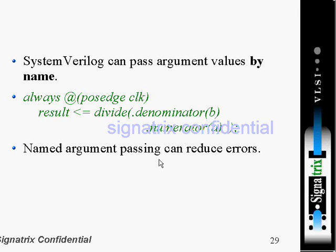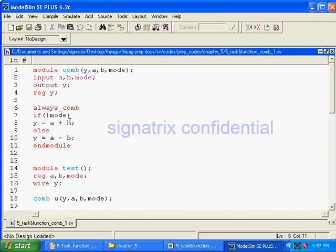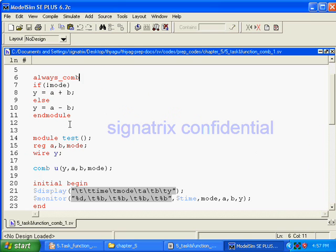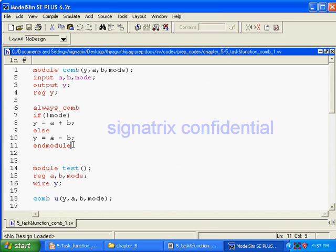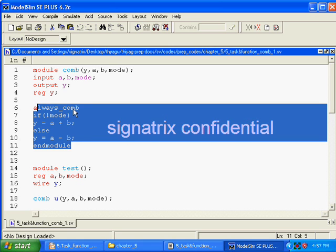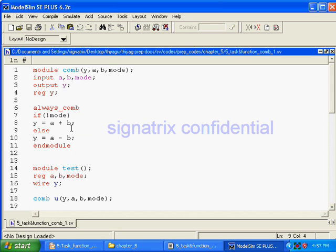Named argument passing can reduce errors. If you have a very big list — suppose more than 10 parameters or arguments — you need to remember the order if you are passing by position. If you go with passing by name, you can reduce errors. Also, if you want to infer combinational logic, you have to use the 'always_comb' block.